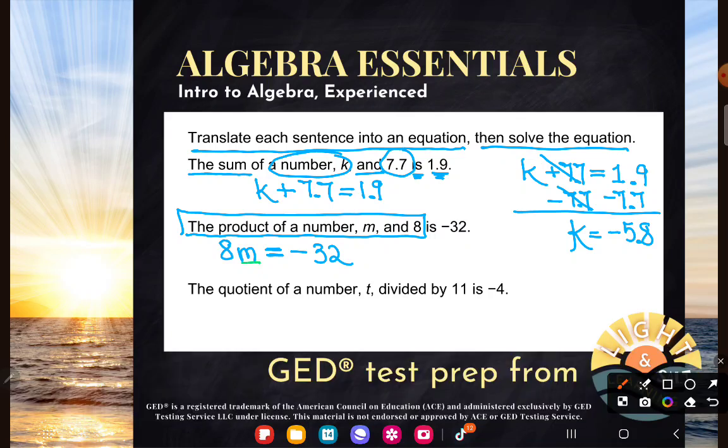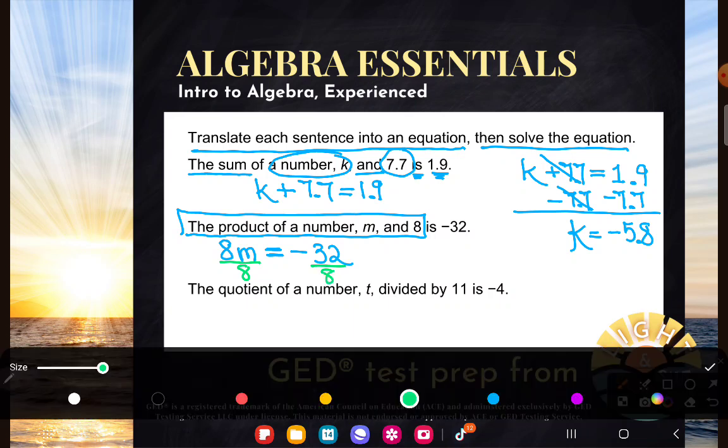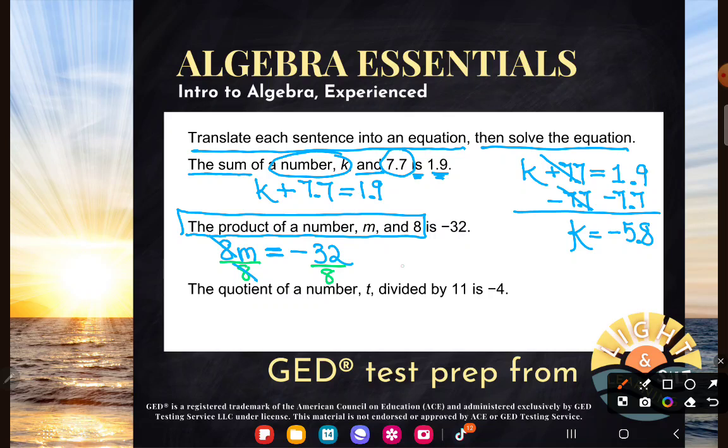In order to solve it, I have to take away that 8 that's multiplying. I can do whatever I want as long as I do it to both expressions, the left and the right hand side. Multiplying and dividing by 8 are opposites. They cancel. M is alone,